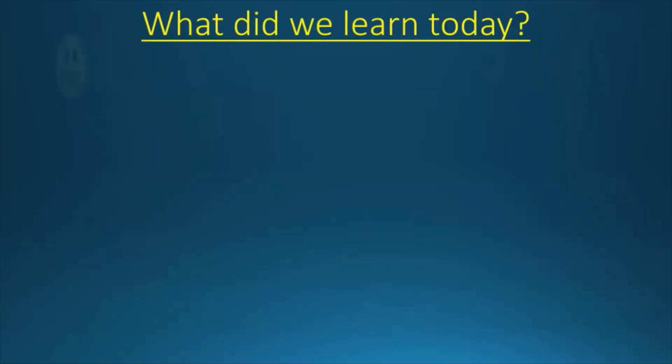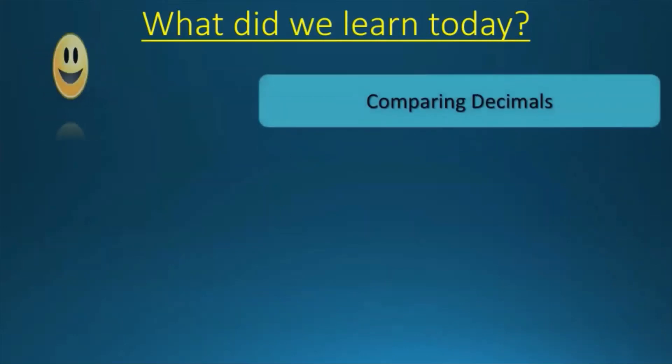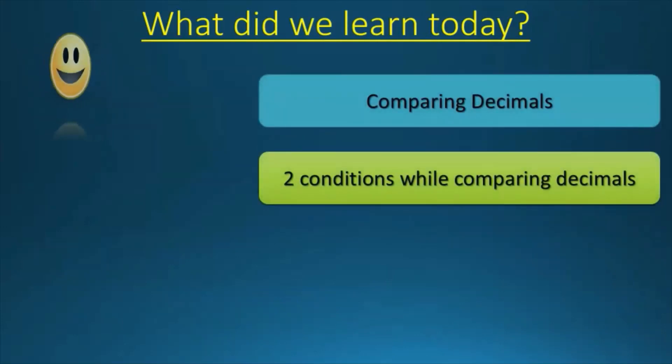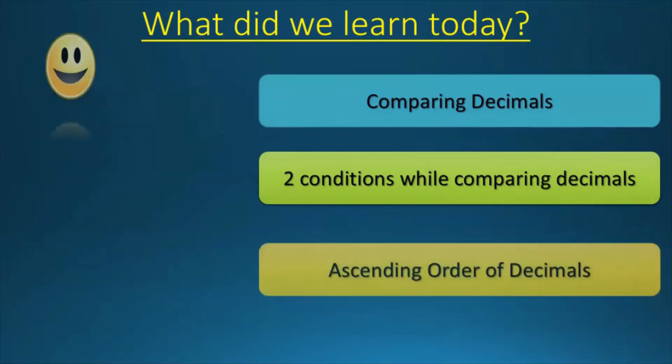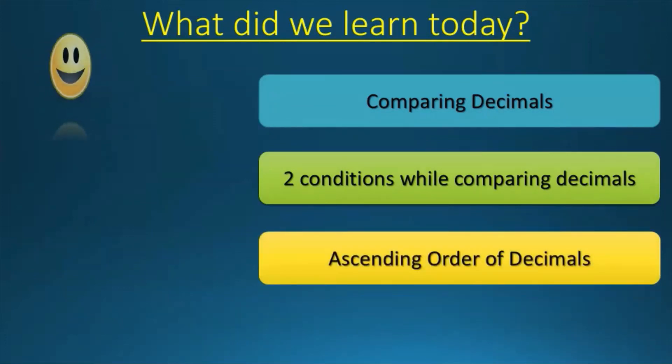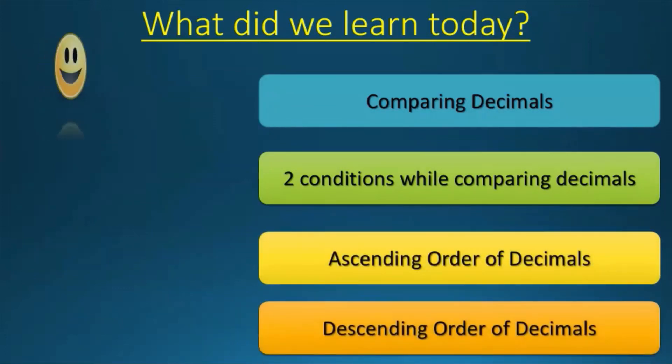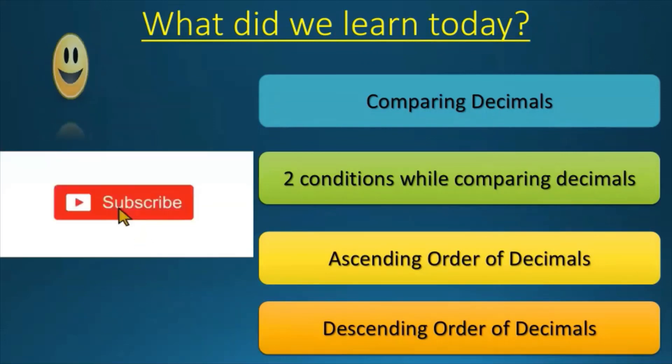So, what did we learn today? We learned how to compare decimals. There are two conditions while comparing decimals. Ascending order of decimals and descending order of decimals. So if you liked the video, please like, share, subscribe, and hit the notification bell to get more videos like this.